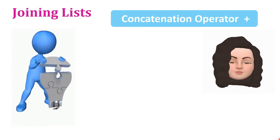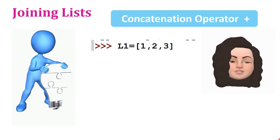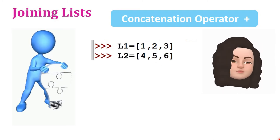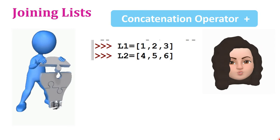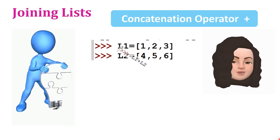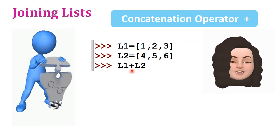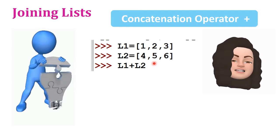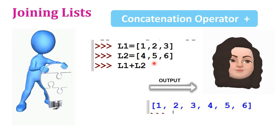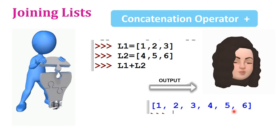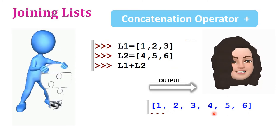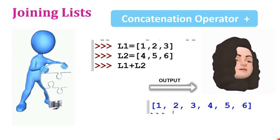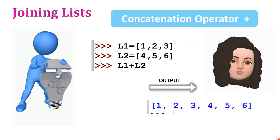Let's have a look at an example. L1 is equal to the list [1, 2, 3]. L2 is another list which contains the elements [4, 5, 6]. When we join L1 and L2, the elements of both lists will be combined together in a single list. The output is [1, 2, 3, 4, 5, 6]. So the list concatenation operator is plus — it combines two lists.